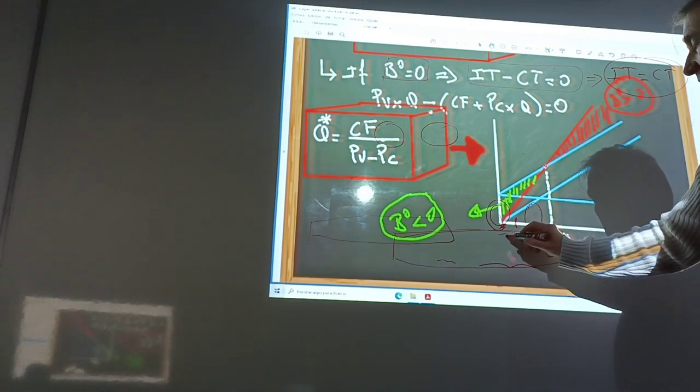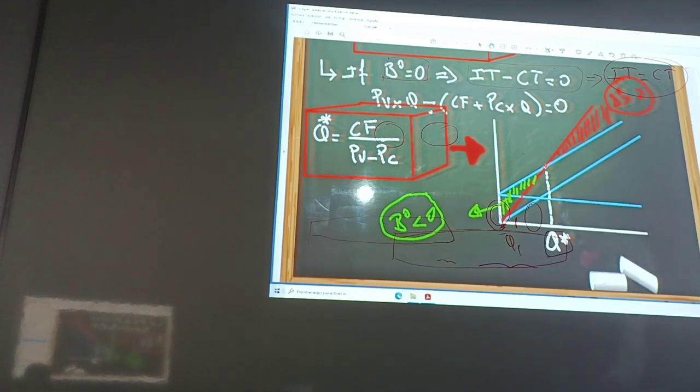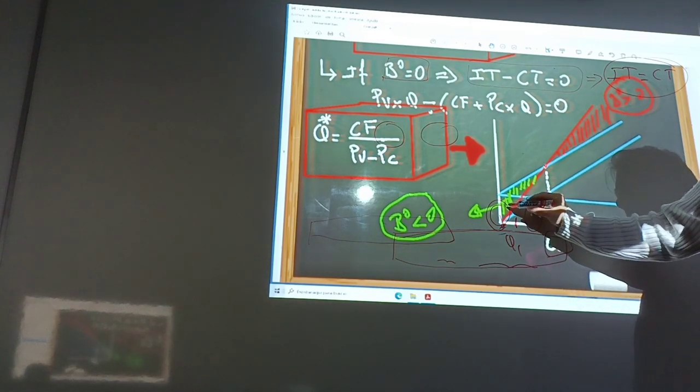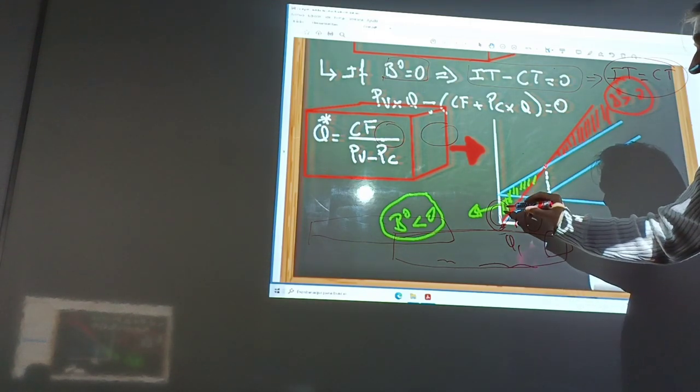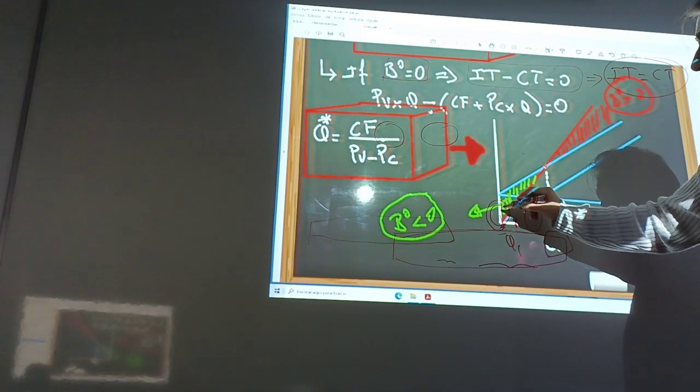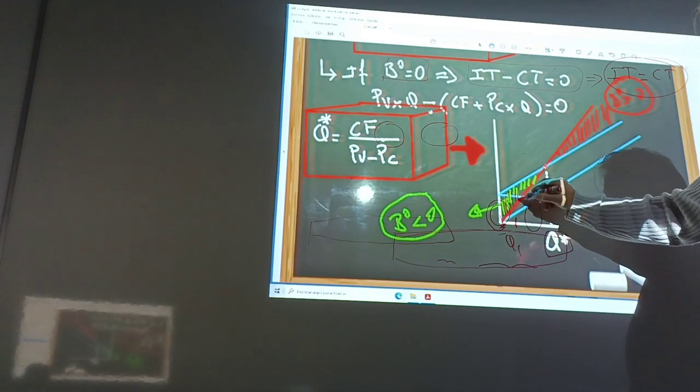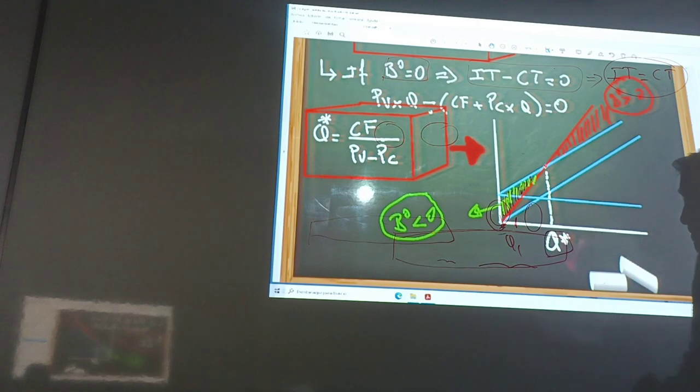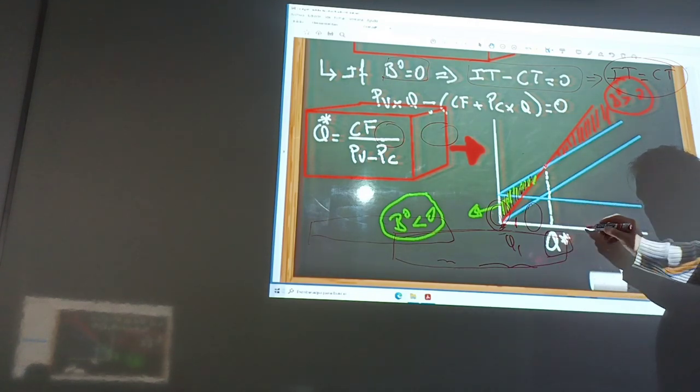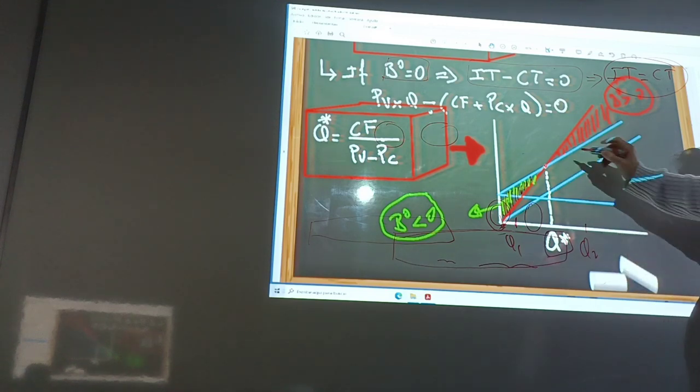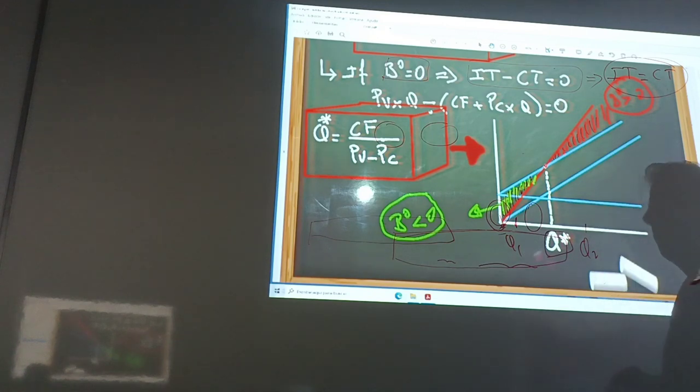for example, quantity one, the business or the firm or the company has lost. And over this quantity, for example, quantity two, the company has benefits.